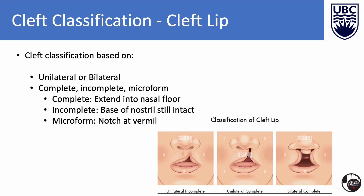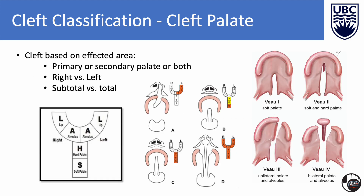Cleft lips are classified based on whether they are unilateral or bilateral, and further subdivided into complete or incomplete. Incomplete clefts have an intact nostril, as seen in the image on the far left. Complete clefts extend through the lip into the nasal floor, as seen in the middle image. Microform clefts are often defined by a small vermilion notch at the vermilion border, an imperfect white roll, and vertical lip shortness. There are several classification systems for cleft palate, most based on the affected area — whether the primary or secondary palate or both, whether they are right or left-sided, and if they are subtotal or total.